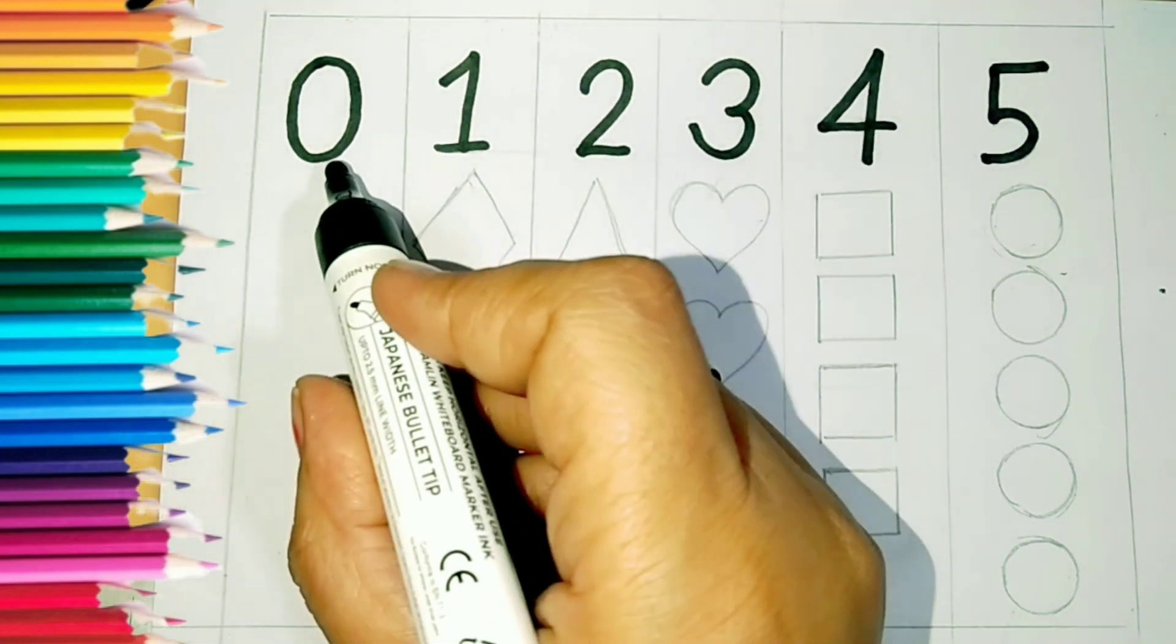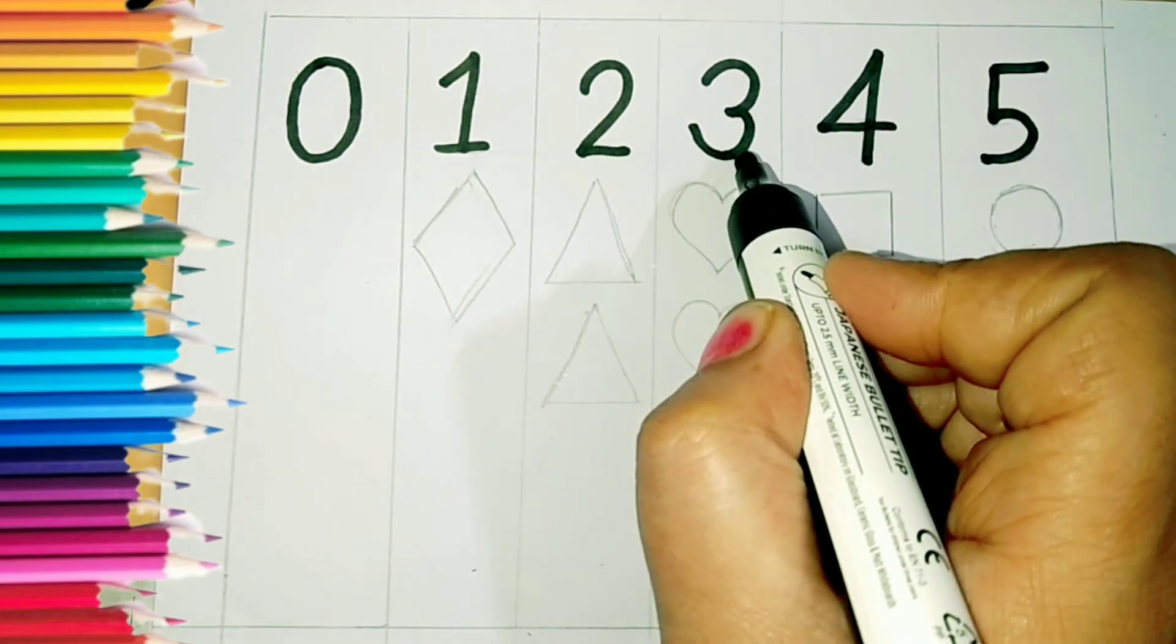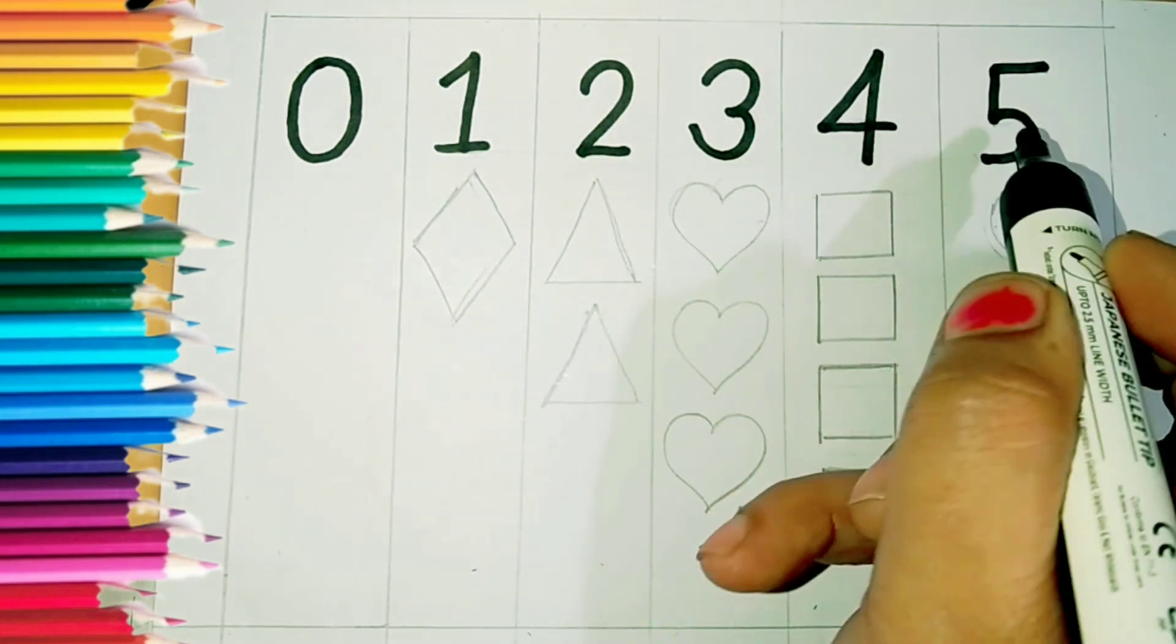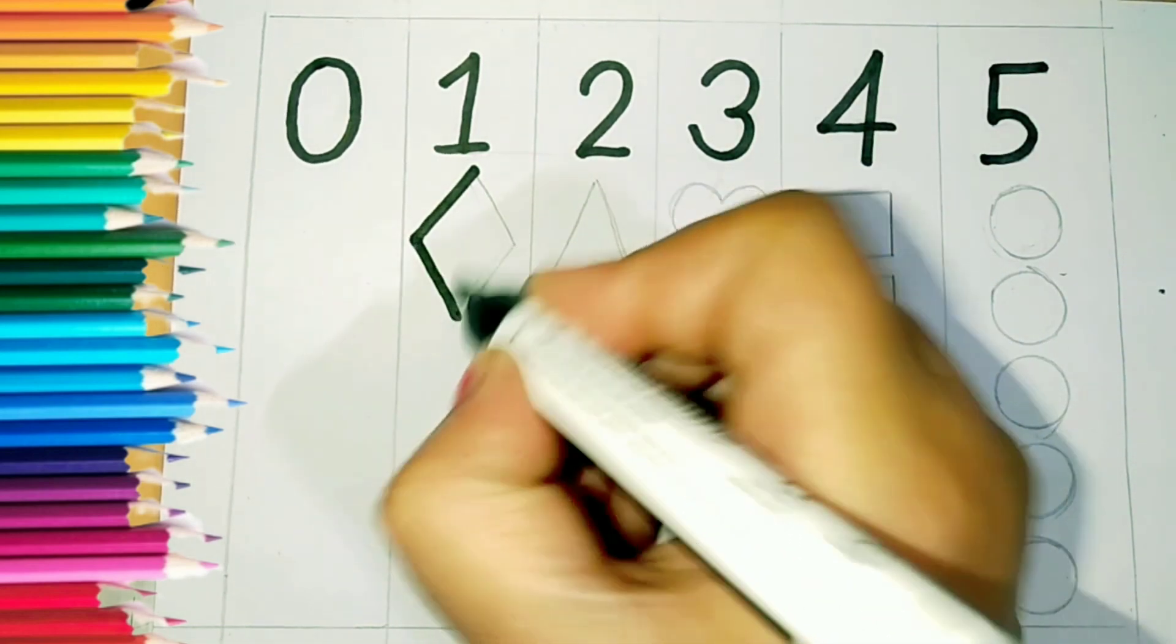Again, zero, one, two, three, four, five. Now one is diamond.